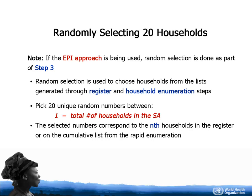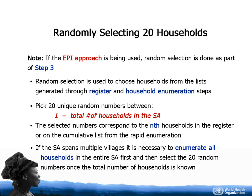The selected numbers correspond to the nth household in the register, or on the cumulative list from the rapid enumeration. If the area spans multiple villages, it is necessary to enumerate all households in the entire area first, and then select 20 random numbers once the total number of households is known.